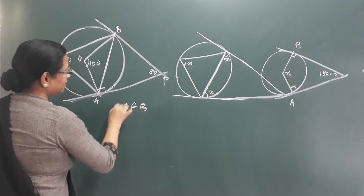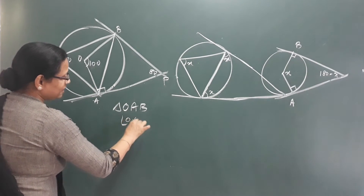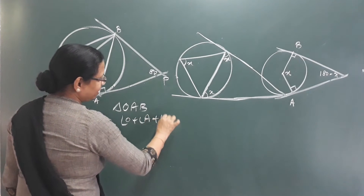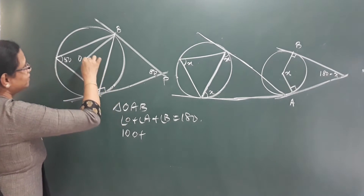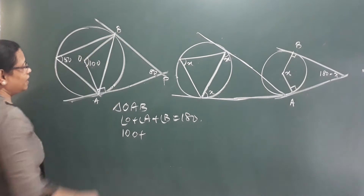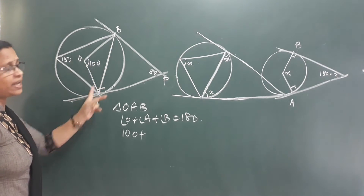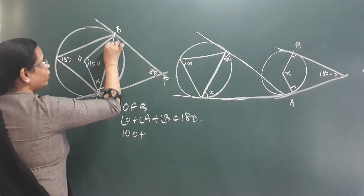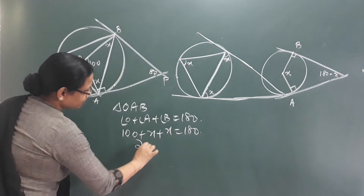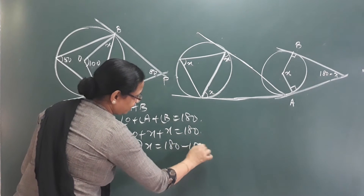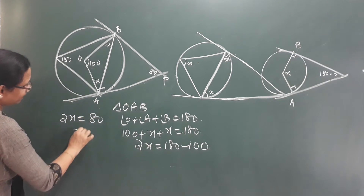Here we have a coordinate. What is the triangle? Angle has some property. We call it angle O plus angle A plus angle B, that is equal to 180 degrees. We call it angle 100. This is an isosceles triangle. OA and OB are radii of the circle. I call this an isosceles triangle and the base angles are equal. This is x plus x that is equal to 180 degrees. So 2x that is equal to 180 minus 100. That is 2x that is equal to 80.